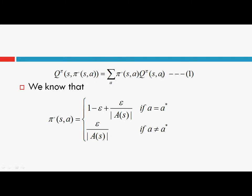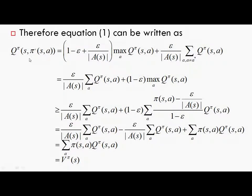This expression can be decomposed by multiplying each action with its probability of selection. Pi-dash assigns probability 1 minus epsilon plus epsilon over mod A_s to the optimal (greedy) action, and epsilon over mod A_s to non-optimal actions. So this expression can be decomposed accordingly: q_pi(s, pi-dash(s)) is 1 minus epsilon plus epsilon over mod A_s when the action is greedy, and epsilon over mod A_s when the action is not greedy.